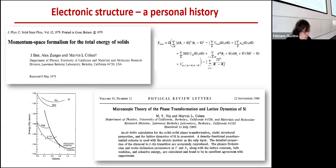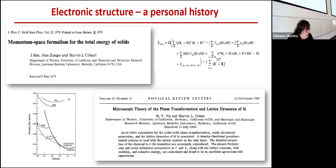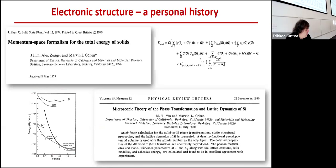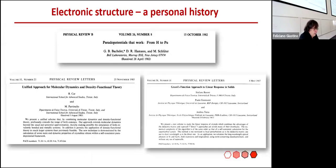Cohen showed in 1980 that you could actually predict the equation of state of silicon in all its different phases — the equilibrium lattice parameter, the bulk modulus, the phase transition pressure to beta-tin. And I think if you see this figure from 1980, everything else that we have done for the past 44 years is almost self-evident. This is the first time one could actually calculate the properties of solids from first principles. We just kept doing refinements on top of this.